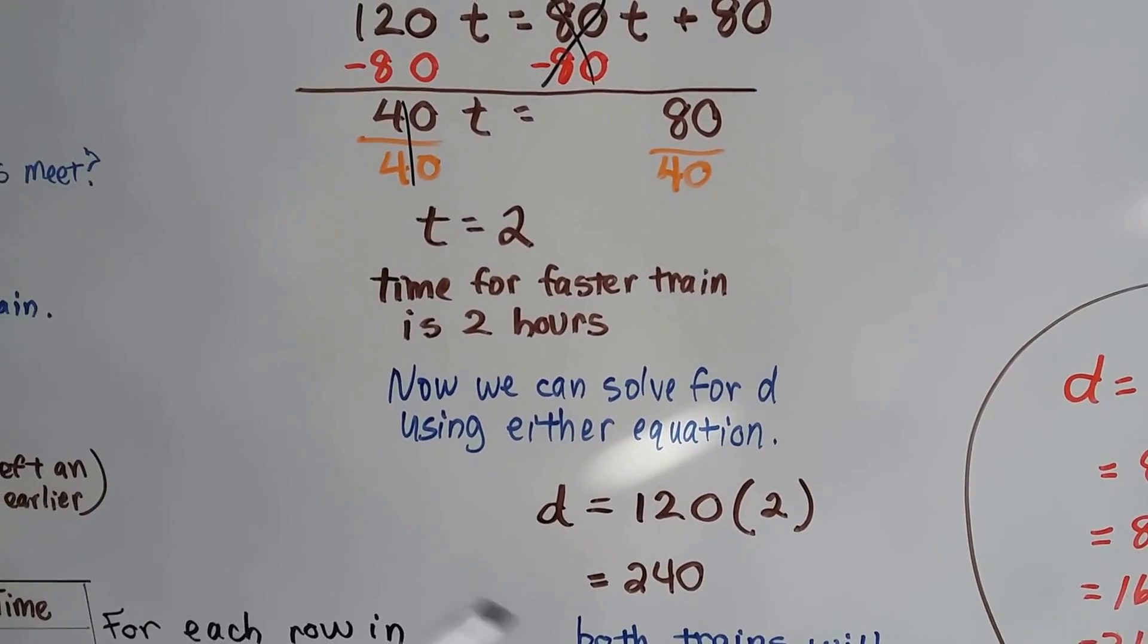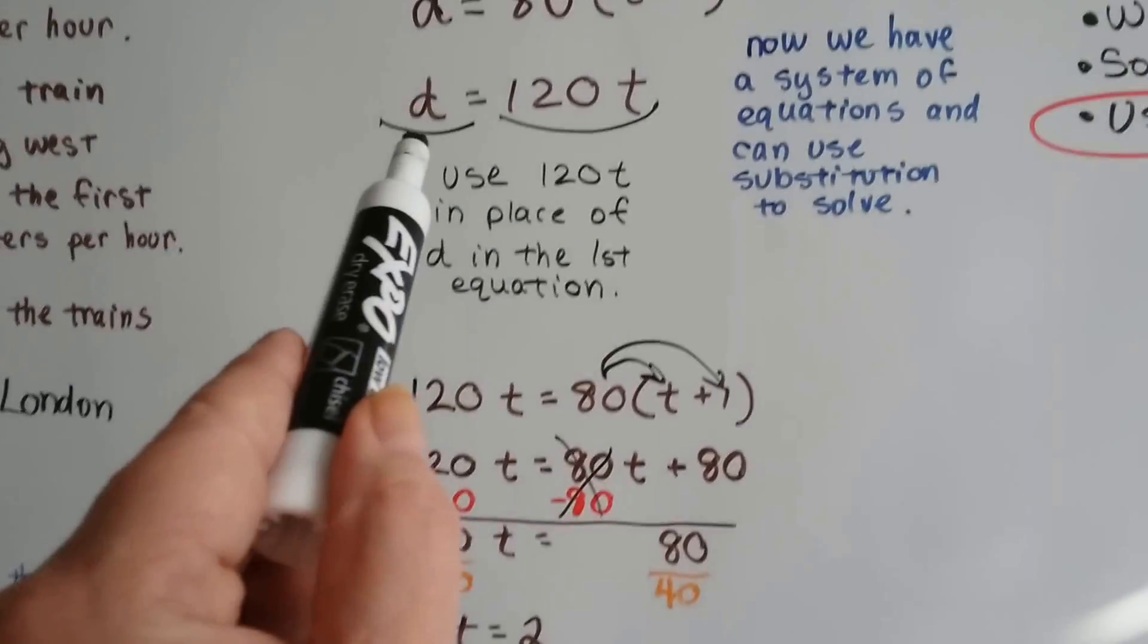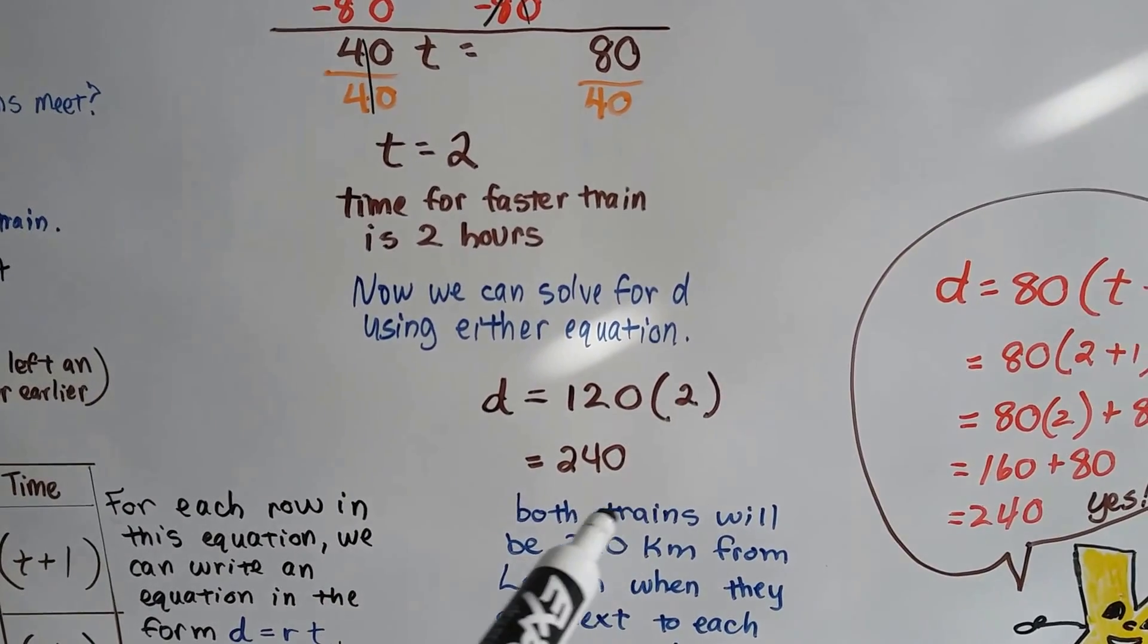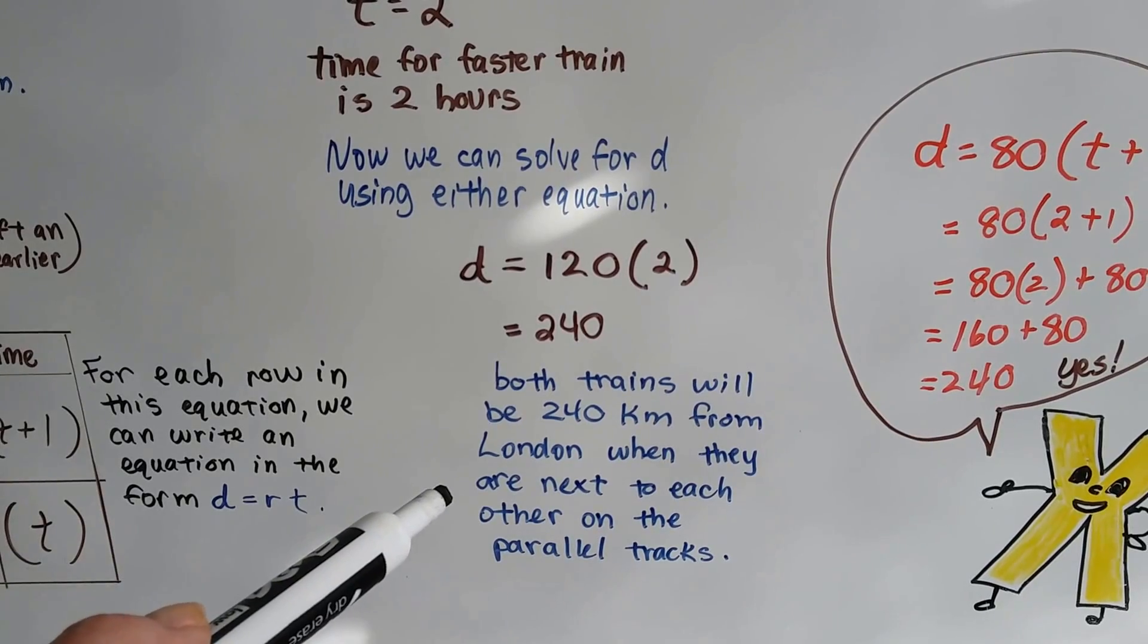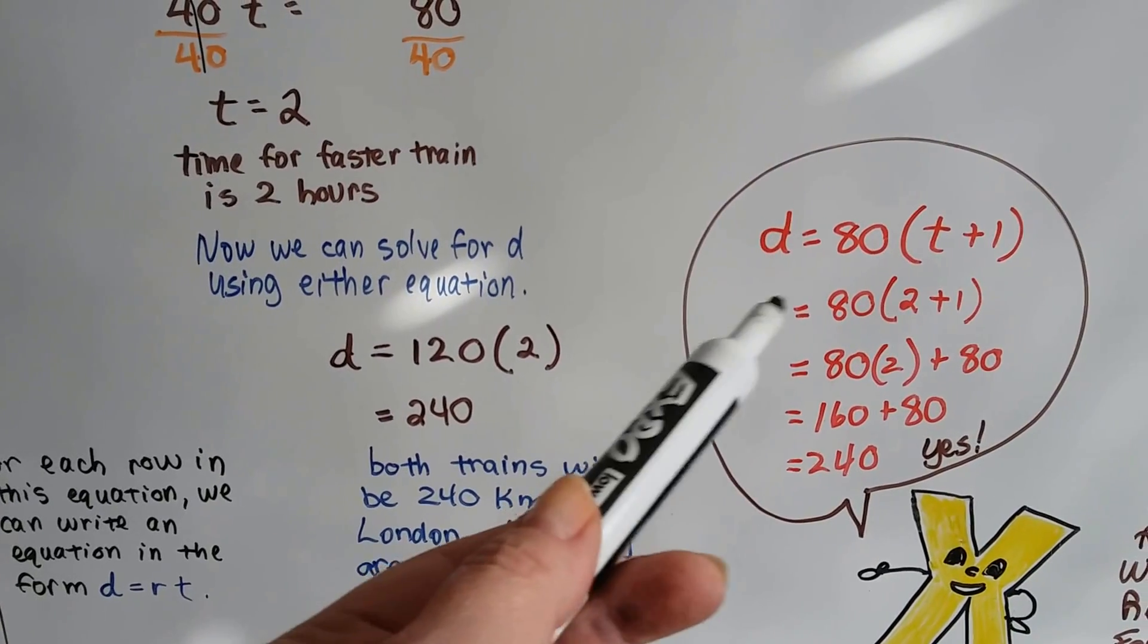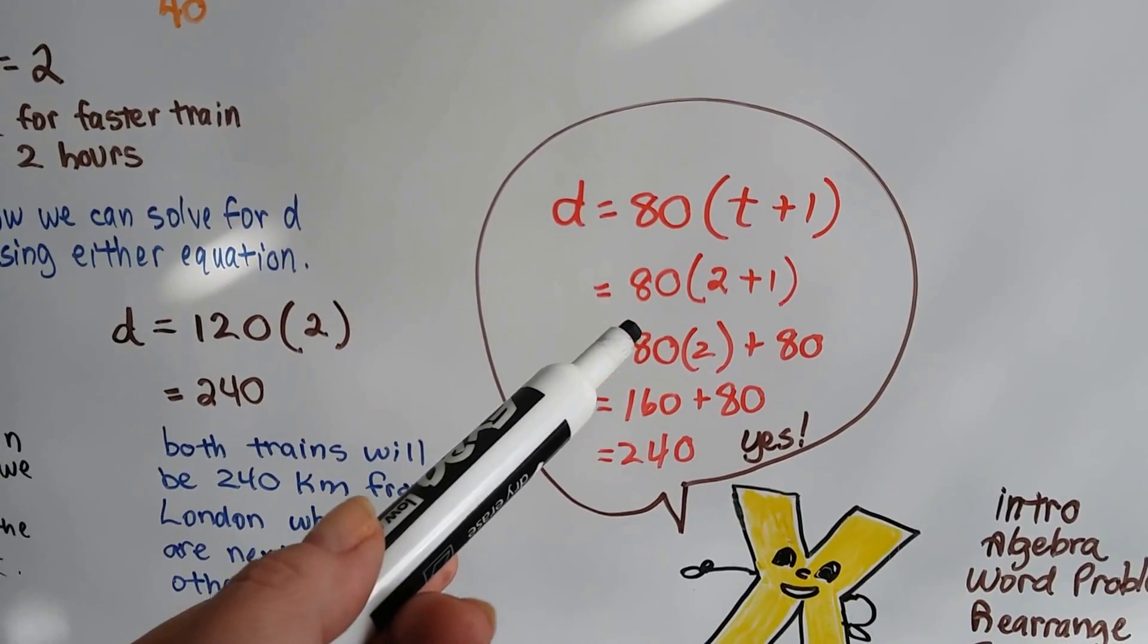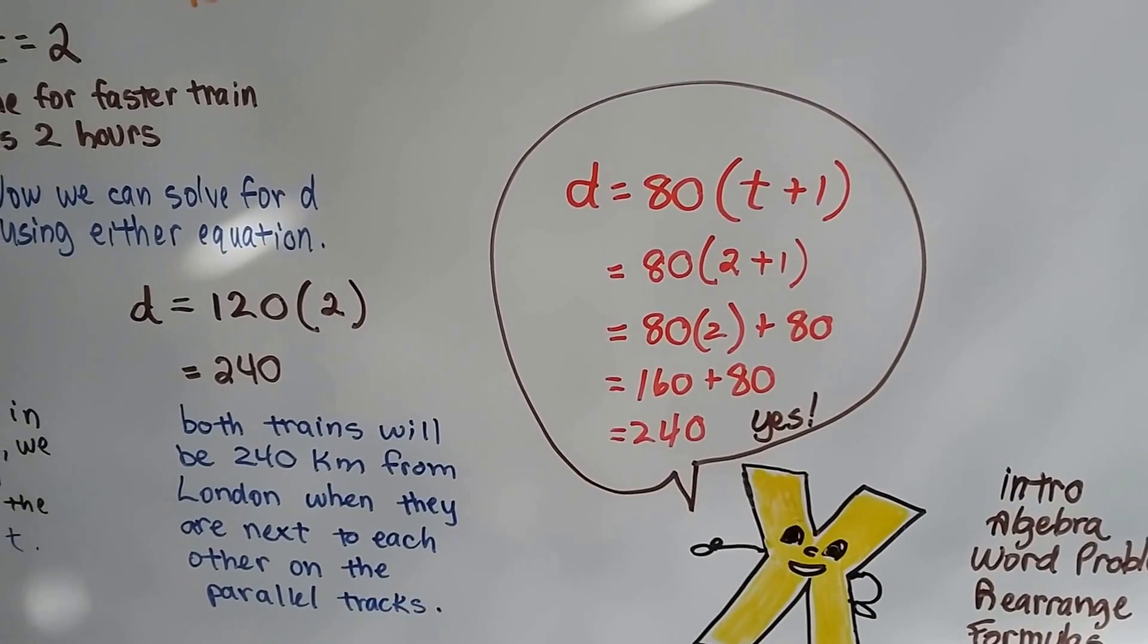We can solve for d using either equation by plugging in t as 2. In d equals 120t, the distance equals 120 times 2, which is 240. Both trains will be 240 kilometers from London when they meet. We can check by plugging 2 into the first equation: d equals 80 times (2 plus 1), which is 80 times 3, which equals 160 plus 80, equals 240. It worked.